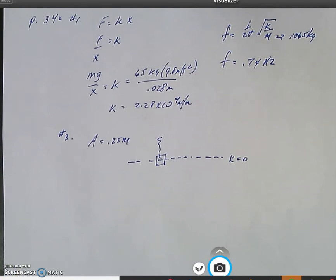Question three: If a particle undergoes simple harmonic motion with amplitude of 0.25 meters, what's the total distance it travels in one period? Well, the total distance